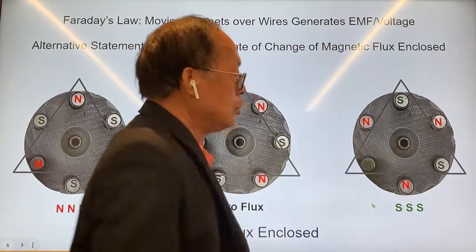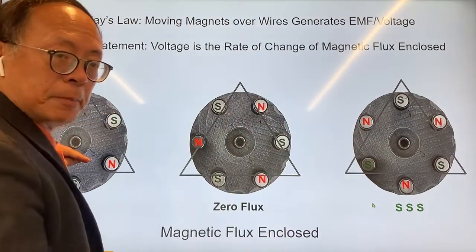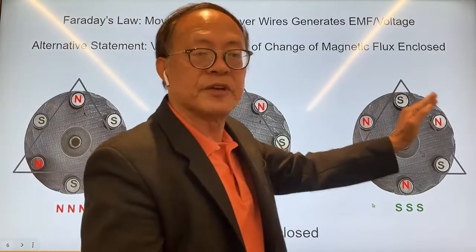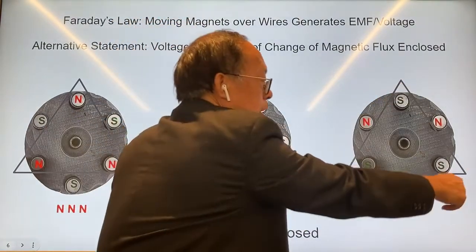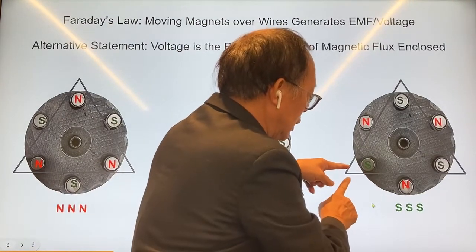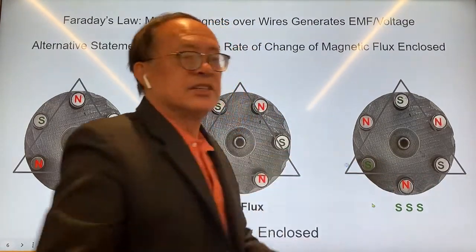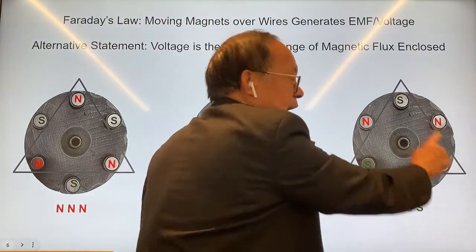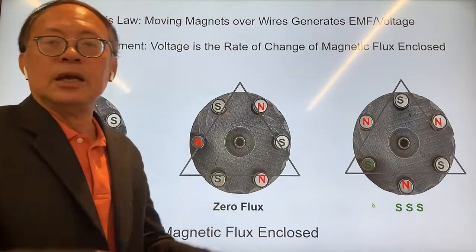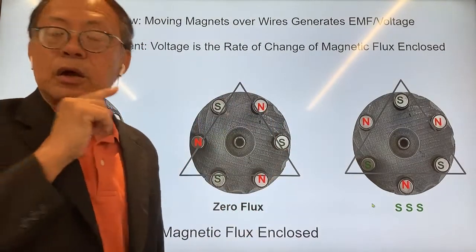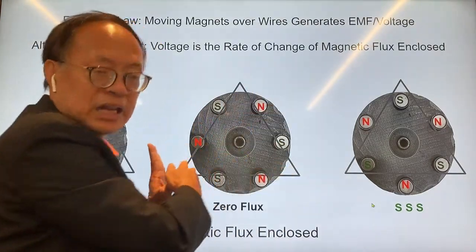If you turn a little bit further, you have all three south poles inside the triangle. So for one phase, you move from a maximum north pole flux to a zero flux to a maximum south pole flux. According to Michael Faraday, the electric voltage created in this area — between the negative pole and the positive pole — is equal to the rate of change of the magnetic flux inside the triangle. This corresponds to a maximum flux and a minimum flux, and the rate of change is determined by the velocity of rotation of the rotor. That's how you generate electricity by changing the amount of magnetic flux inside the triangle.